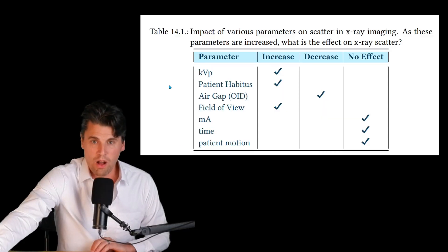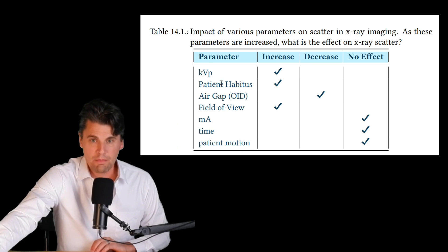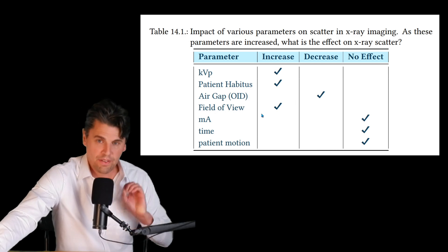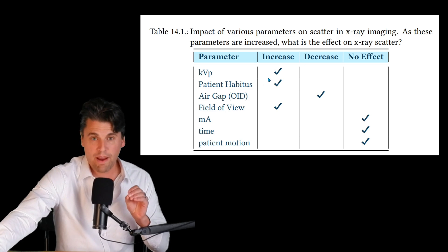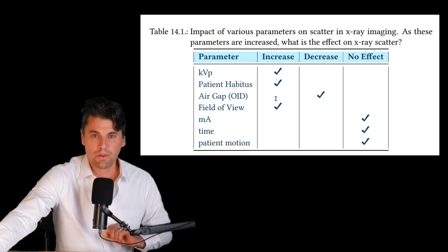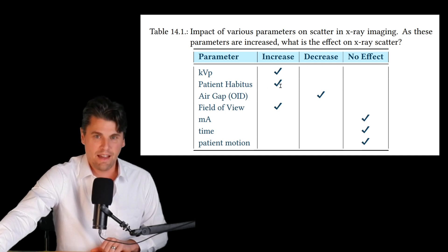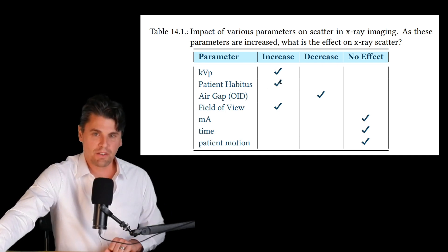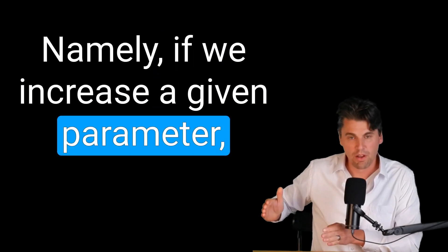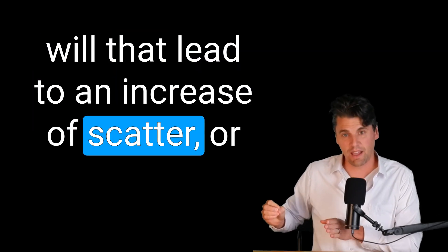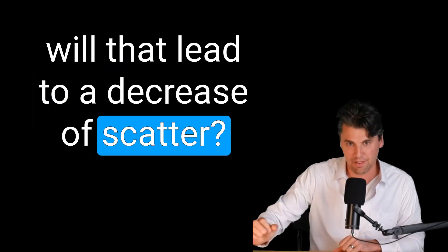To start off, we're going to walk through this table right here, line by line, going through the different areas of physical effects and technical parameters in order to identify which ones impact scatter. We also want to know the directionality — namely, if we increase a given parameter, will that lead to an increase or a decrease of scatter?